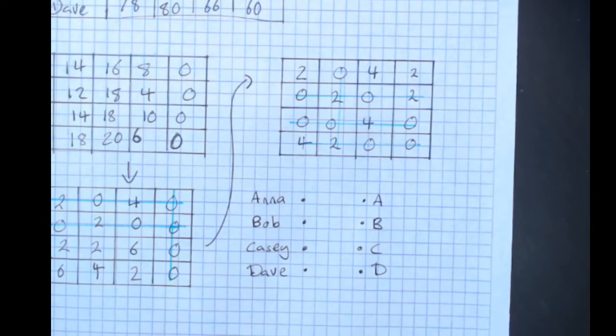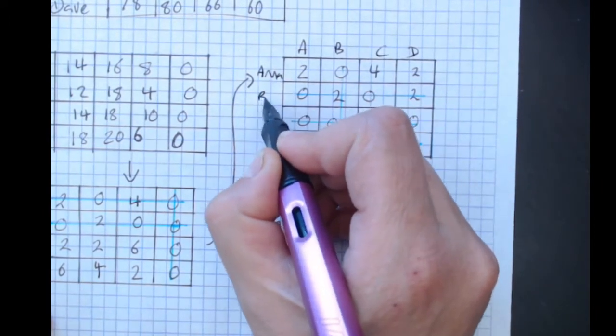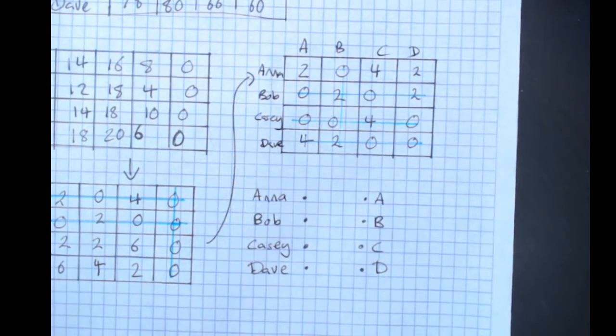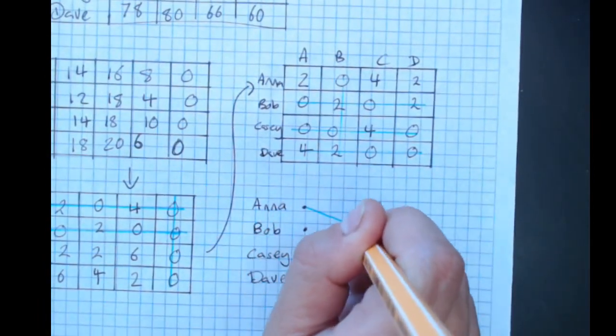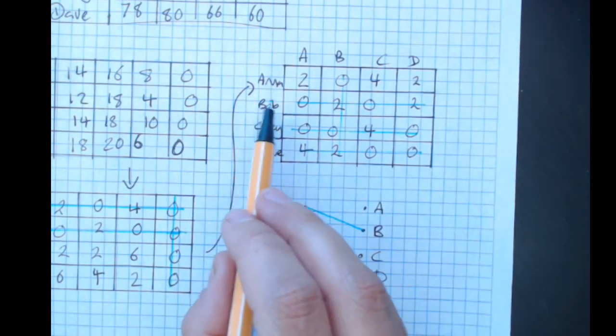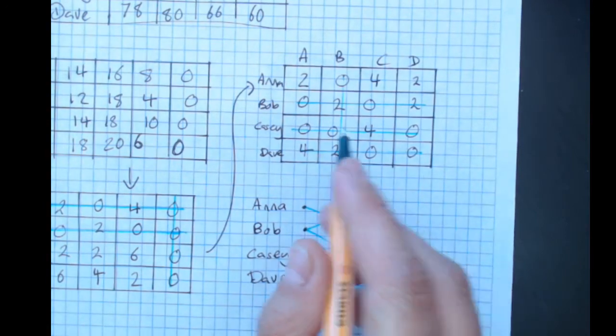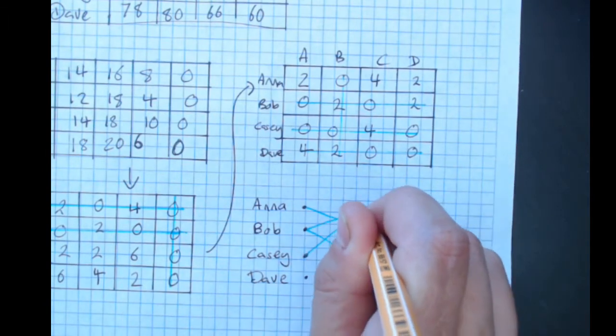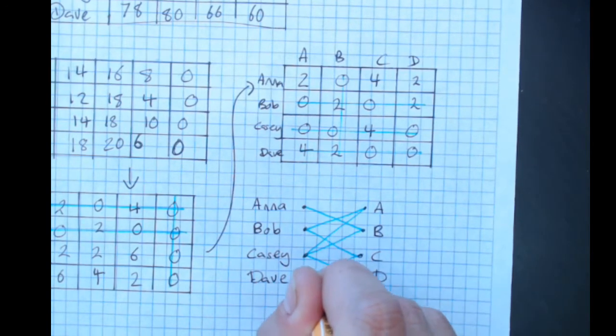We put in a line for every zero value. So it might be easier to label these again. So Anna has a zero going to B. Bob has a zero at A and C. Casey can do practically everything A, B or D. Dave can do C or D.